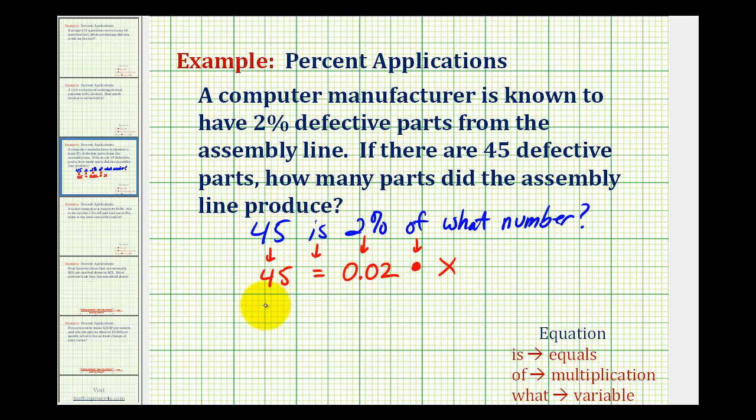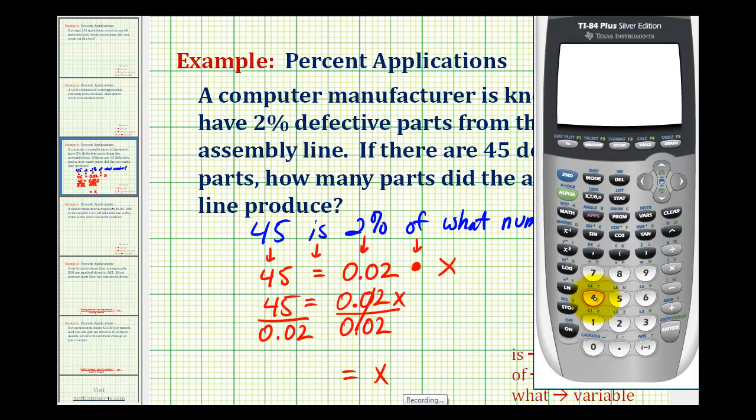Now let's go ahead and rewrite this. We'd have 45 equals 0.02 times x, which is just 0.02x. To solve this equation, we'll divide both sides by 0.02. So here we have x, and 45 divided by 0.02 will give us the total number of parts produced, which is 2250.